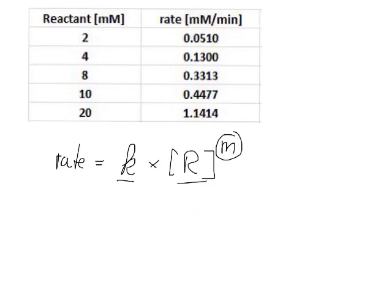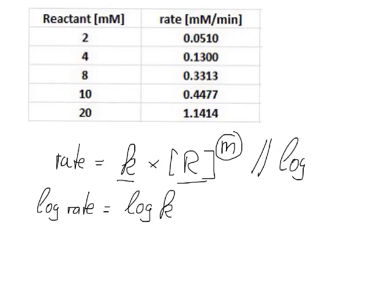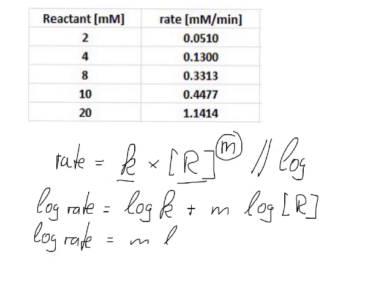Well in order to find m what we need to do is we can log both sides. So we can use the log to the base of 10 or we can use any other logarithm as long as we are consistent and we would get log rate equals log k plus m times log of the concentration of the reactant. And we can also write this in a slightly different form. So log rate equals m log of the reactant concentration plus log k, and that is the equation for a straight line.